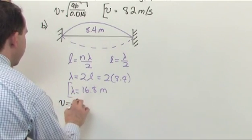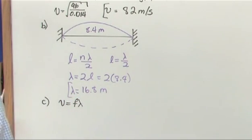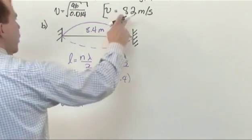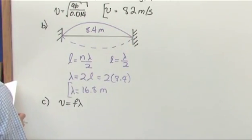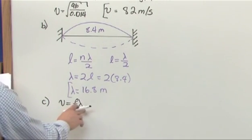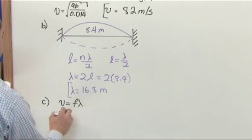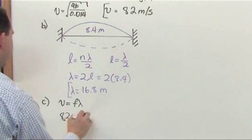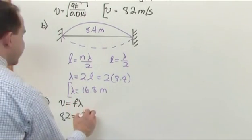We could say v equals f lambda. That's a surefire way to always calculate the frequency. We know what the wavelength is, we know what the velocity is, so we can go ahead and calculate that. V equals f lambda: V is 82 meters per second, f is what we're trying to calculate, and lambda is 16.8.